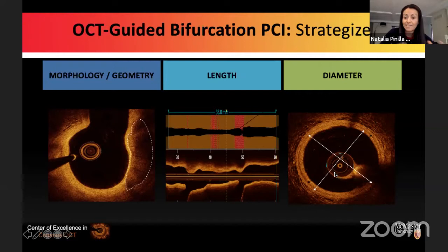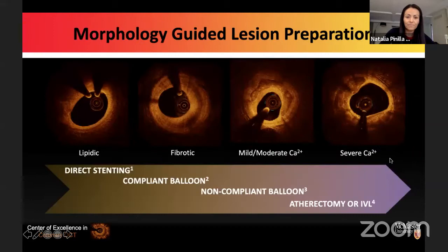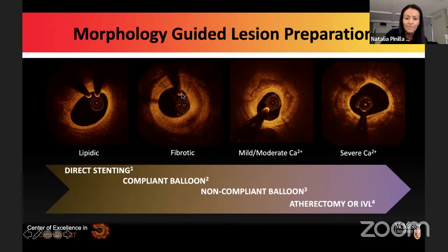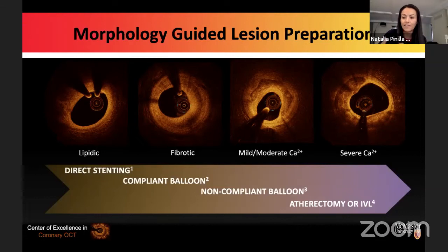An under-expanded stent or a smaller caliber stent definitely drives worse expansion outcomes. Regarding morphology: if you have lipidic plaque, you can consider direct stenting. If you have significant fibrotic plaque affecting the minimum lumen area, at least compliant balloon preparation is needed. Mild to moderate calcification can often be managed by displacing non-calcific tissue to gain good stent expansion, but severe or nodular calcification requires more aggressive balloon techniques or atherectomy.